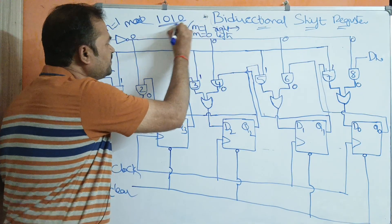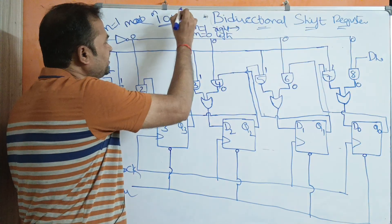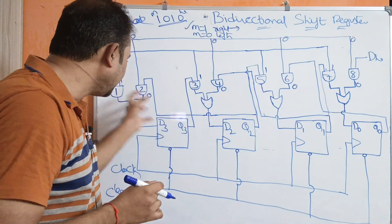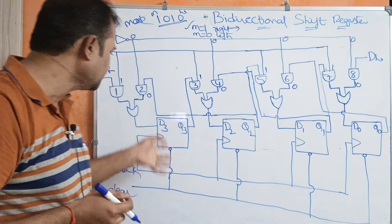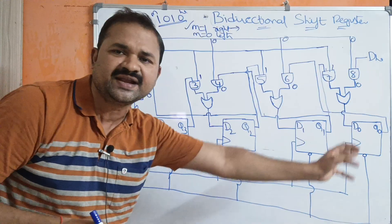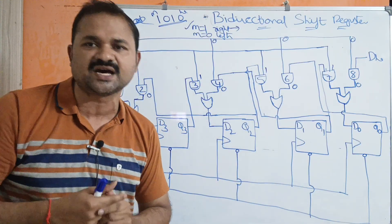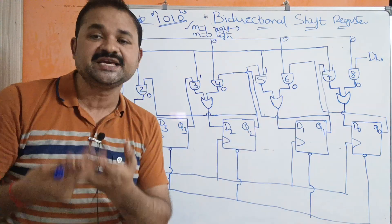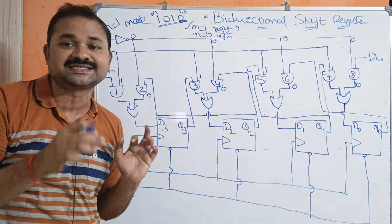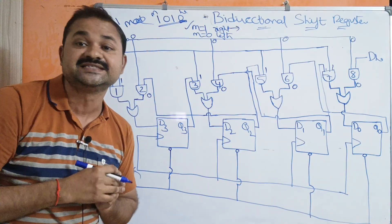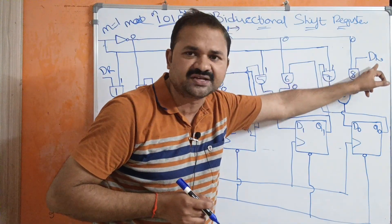Let us assume the register contains 4 bits: 1, 0, 1, 0 — where the leftmost is the most significant bit and rightmost is the least significant bit. This operates like serial output: the output of one flip-flop is supplied as input to the next flip-flop. Four clock pulses are required for loading data into the register, and 3 clock pulses are required for shifting the data. For shift right operation, DR is the serial input; for shift left operation, DL is the serial input.